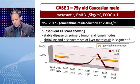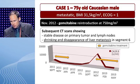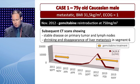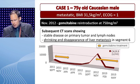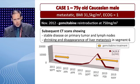Most of you would choose to reintroduce gemcitabine, and that is what happened. In November 2012 the patient was reintroduced with gemcitabine at a slightly reduced dose of 750 milligrams per square meter because of previous side effects. Subsequent CT scans showed stable disease on the primary tumor and lymph nodes, with shrinking and disappearance of the liver metastasis in segment 6, together with a dramatic decrease in tumor marker from 14,000 to about 1,000. This patient is now reaching a survival of 22 months with just gemcitabine monotherapy using a stop-and-go strategy, illustrating that it still seems to benefit some patients.